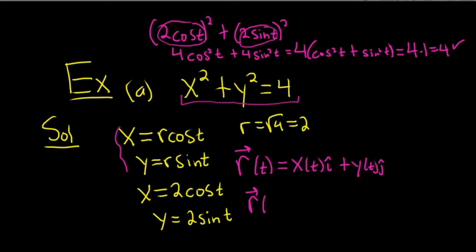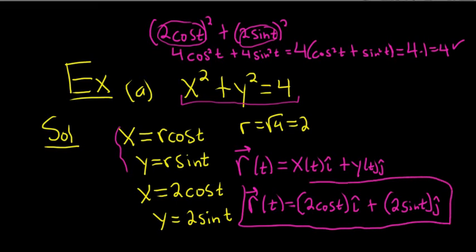So our vector-valued function, r of t, is going to be, let's see, x is 2 cosine t. I'll put it in parentheses. So 2 cosine t, i hat, plus, and then y is 2 sine t, and that one is j hat. And that would be the vector-valued function.